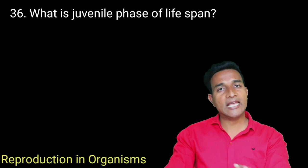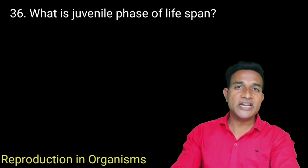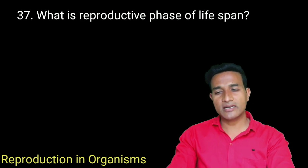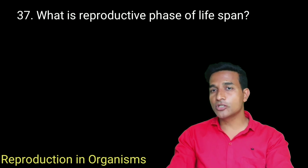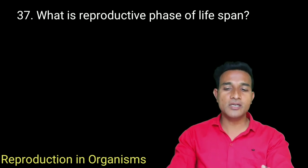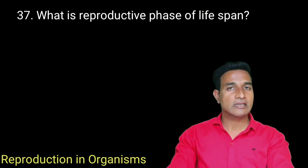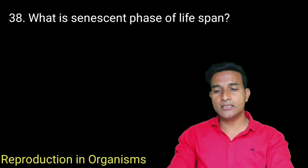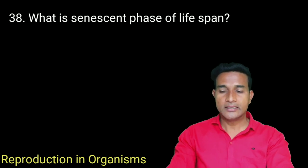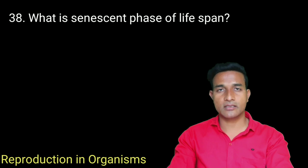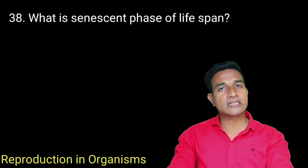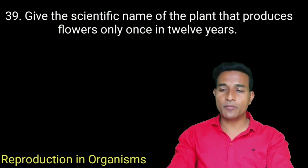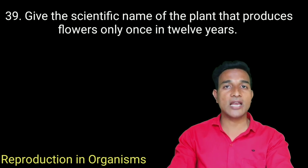What is the juvenile phase of lifespan? It is the period of growth in an organism, called the juvenile phase. What is the reproductive phase of lifespan? The end of the juvenile phase marks the beginning of the reproductive phase in plants as well as animals. What is the senescent phase of lifespan? The end of the reproductive phase marks the beginning of senescence or old age.